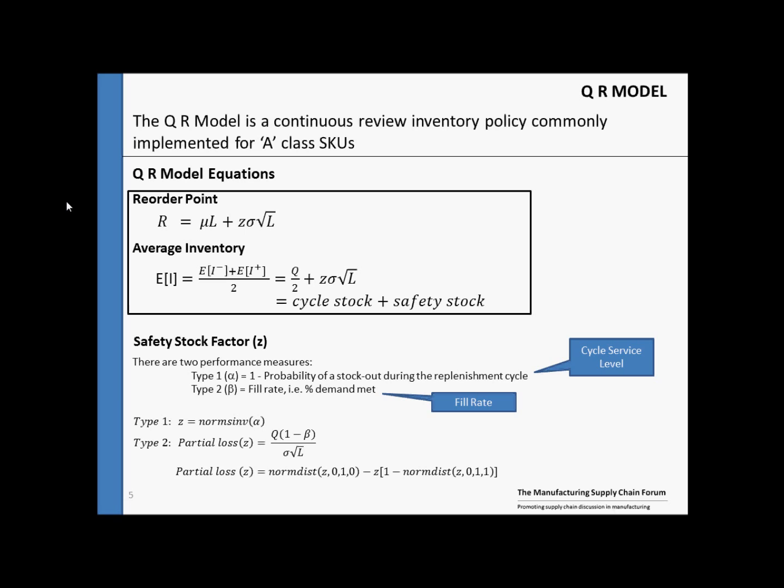Our second measure is the fill rate, otherwise known as type 2 or beta. The fill rate is just a percentage of the demand met. For instance, if we have a beta or a fill rate of 98%, this means that 98% of the demand is met. Below this, we see some calculations we can use in Microsoft Excel to solve the safety stock factor Z for type 1 and type 2.